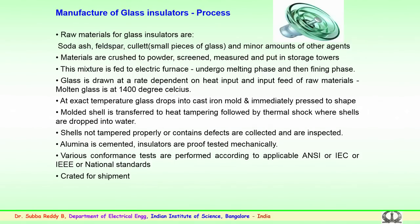At a specified temperature, the molten glass is dropped into the cast iron mold and immediately pressed to the required shape. Depending upon the shape — whether a normal insulator, an anti-fog type with different sheds for higher creepage length, or an aero foil type without sheds for desert conditions — suitable molds are prepared and the molten glass is pressed accordingly.